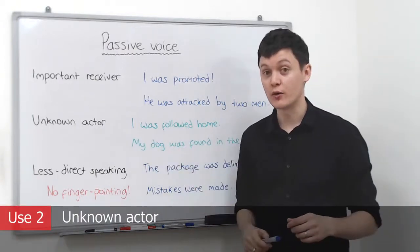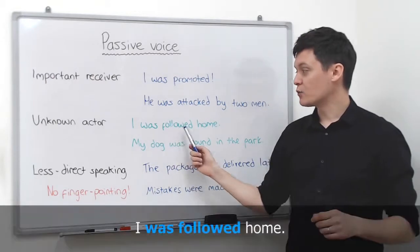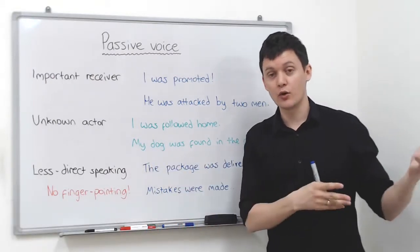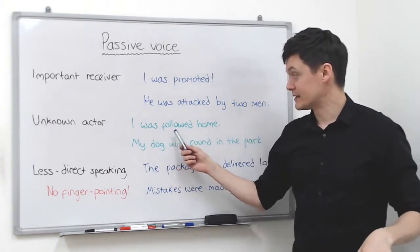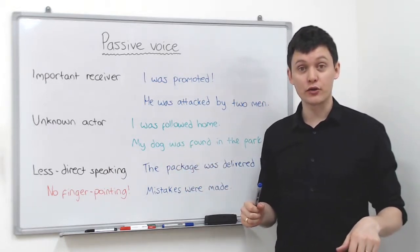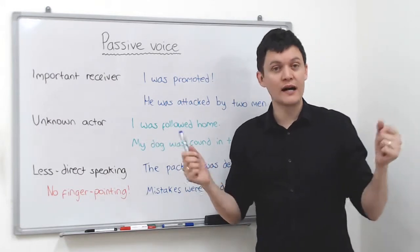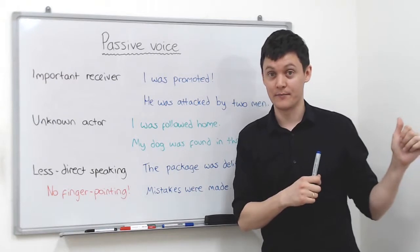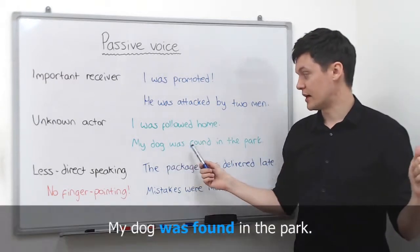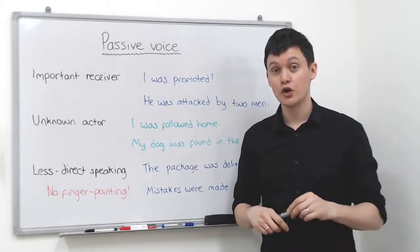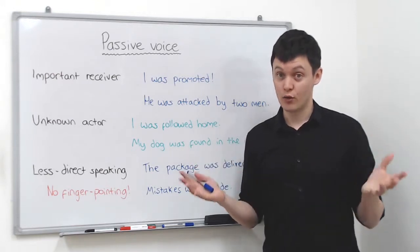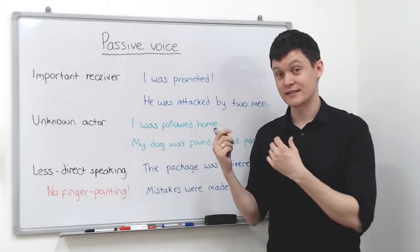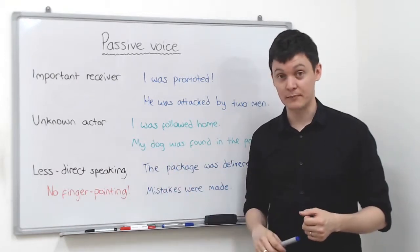The second use is the unknown actor. I was followed home. An unknown actor is simply when we don't know who the actor is, so we eliminate them. In this case: I was followed home — by who? I don't know, so I eliminate them. Same with: my dog was found in the park. Who found my dog? I don't know, so I don't include them in the sentence. My dog is the receiver and is in the subject position.